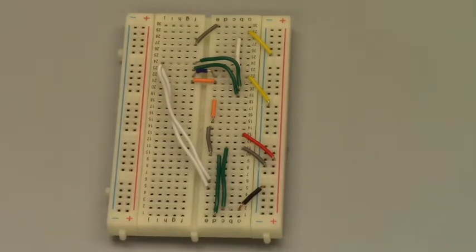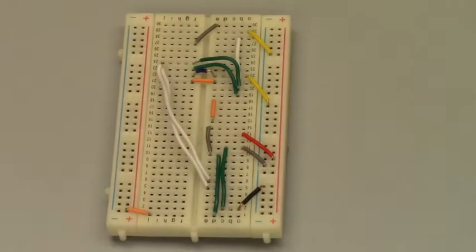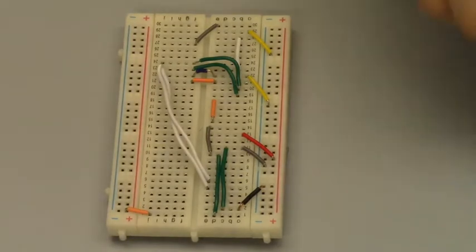Now moving to the other side of the breadboard, use three small pieces of wire to attach J1 to positive, J21 to positive, and F8 to H6.